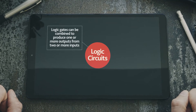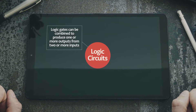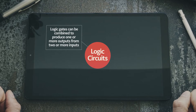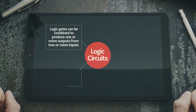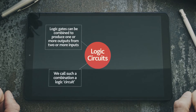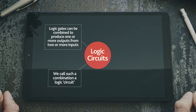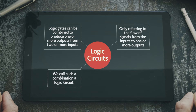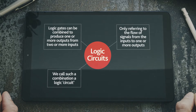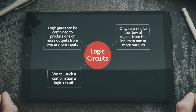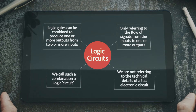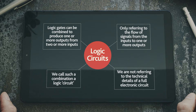Logic gates can be combined to produce one or more outputs from two or more inputs. We call such a combination a logic circuit, even though we are only referring to the flow of signals from the inputs to one or more outputs — not the technical details of a full electronic circuit.